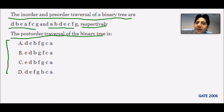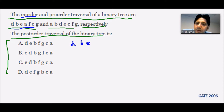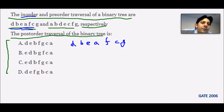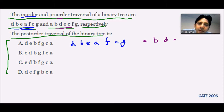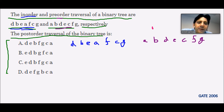Without in-order, a tree cannot be constructed. The in-order given is D B E A F C G. Now we are taking the pre-order: A B D E C F G. This is the pre-order given to us.